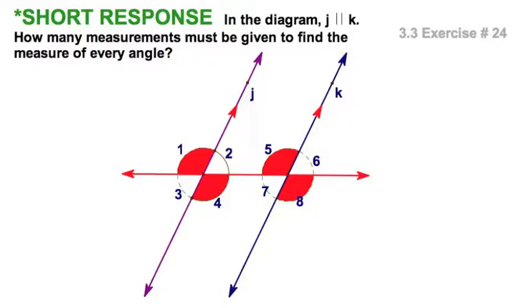Now, I could take the supplements, either using linear pairs or consecutive interior angles for angles 2 and 5, and do the same exercise to show that all the blue ones are congruent.